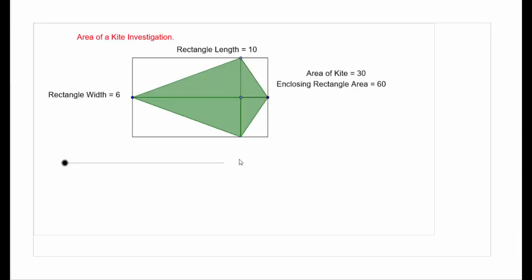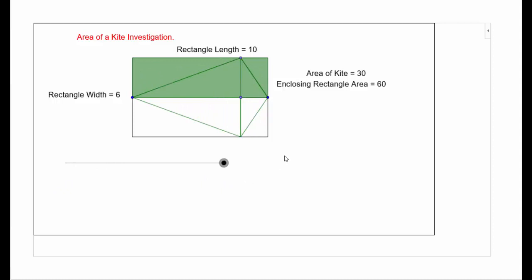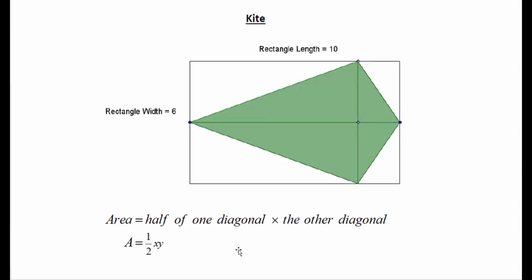The next shape is our kite. The special properties of a kite are that we've got two pairs of adjacent sides equal in length. If we draw in both diagonals, we can see they intersect at right angles, which sets up a whole bunch of congruent triangles. Each triangle fits into a corresponding spot in the enclosing rectangle, so the area of the kite is half the area of the rectangle that encloses it. The length of the rectangle is the length of the long diagonal and the width is half of the other diagonal. So the area formula for a kite is exactly the same as a rhombus: half of one diagonal times the other, or half xy.